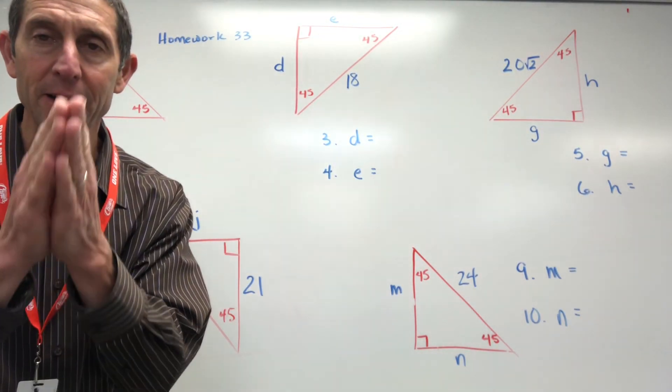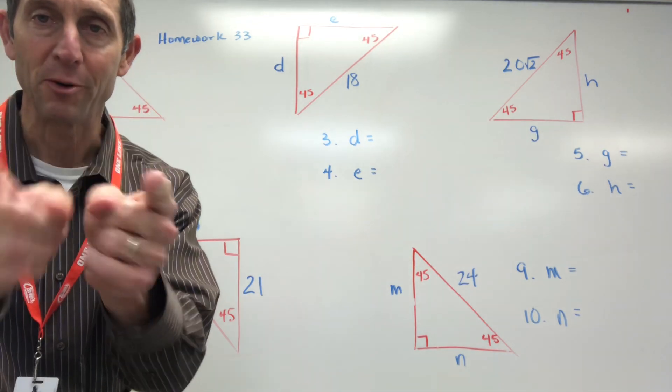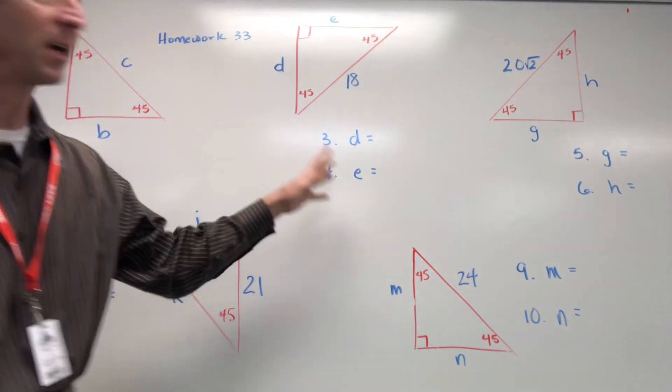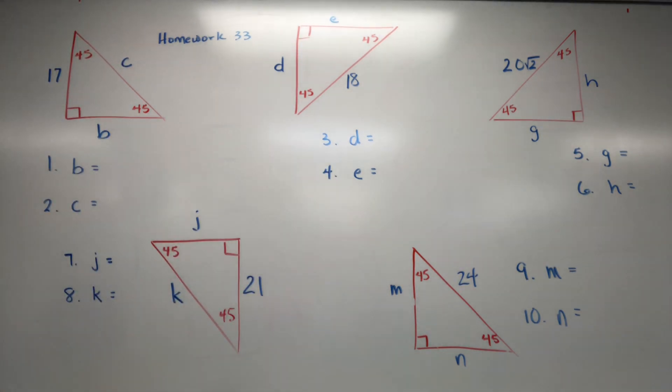All right, second hour, another video with problems for homework 33 just for you guys. It's these five triangles. From these five triangles you got two questions each, total ten questions. So we're just working on the 45-45-90s that we talked about on our Google Classroom.